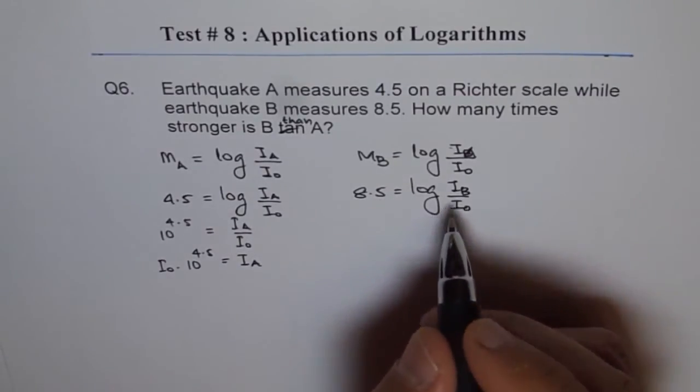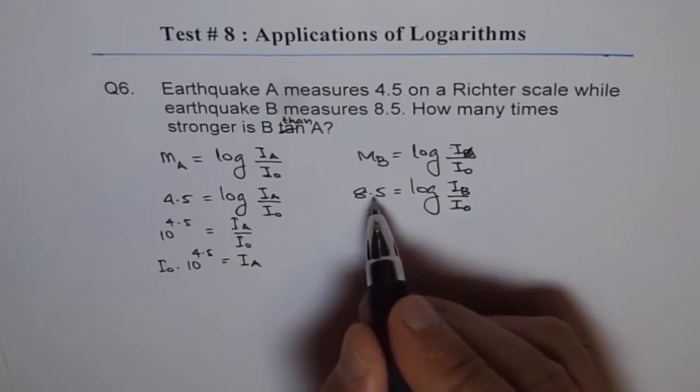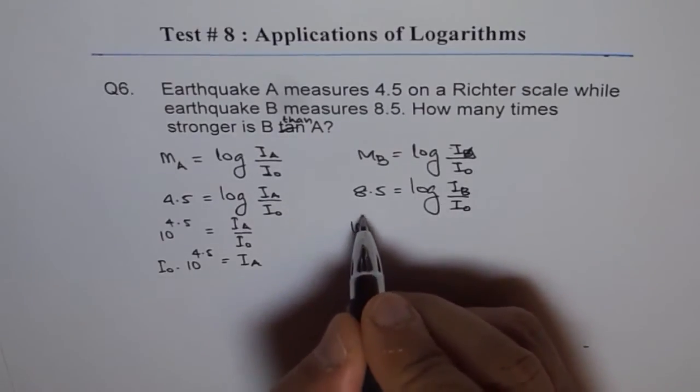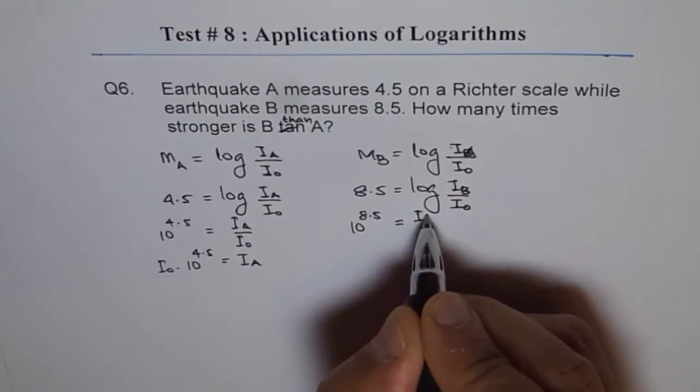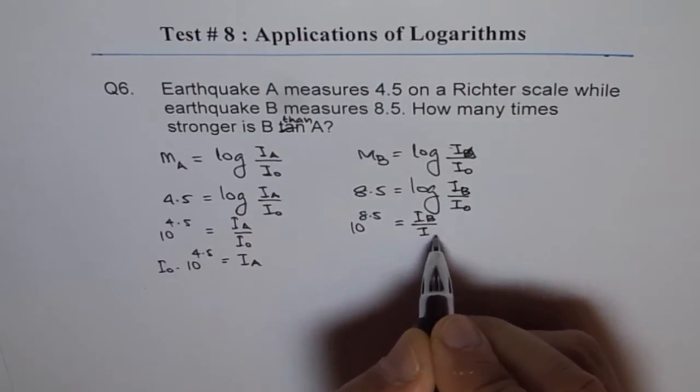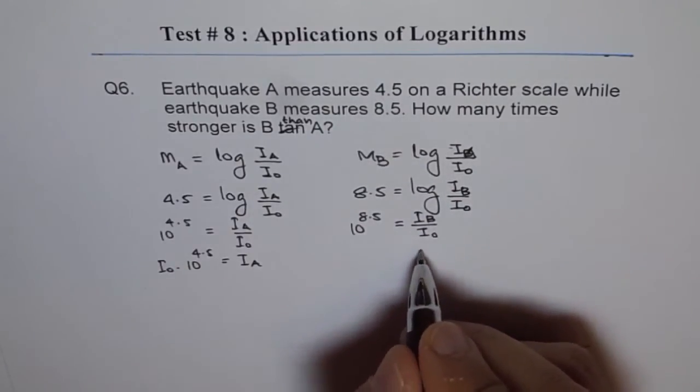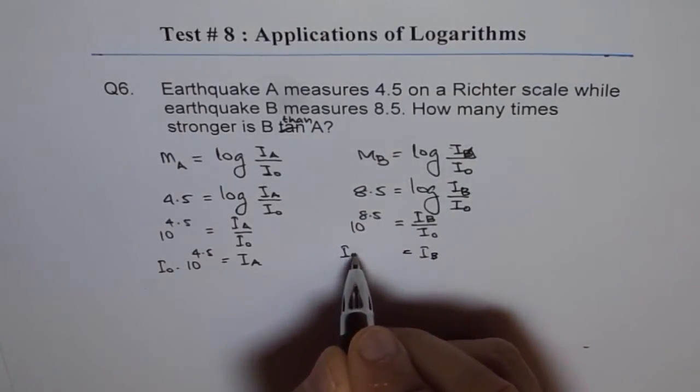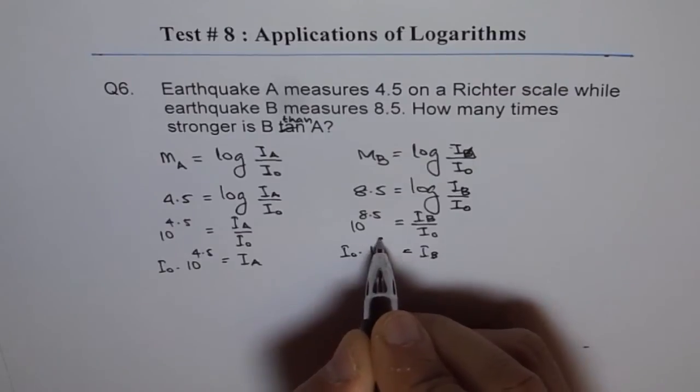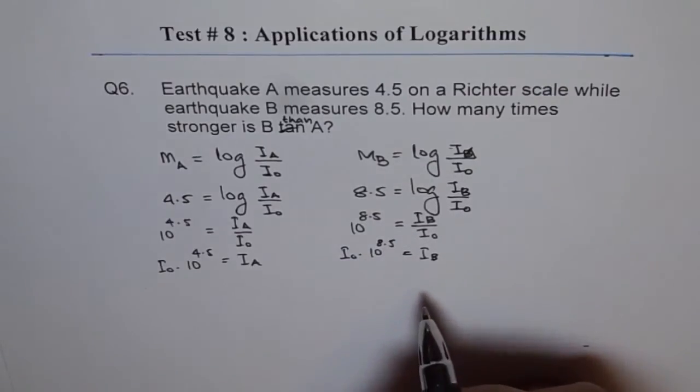Similarly, here we will cross-multiply after writing it in exponential form. So, 10 to the power of 8.5 equals to I B over I0 and I B is equals to I0 times 10 to the power of 8.5.